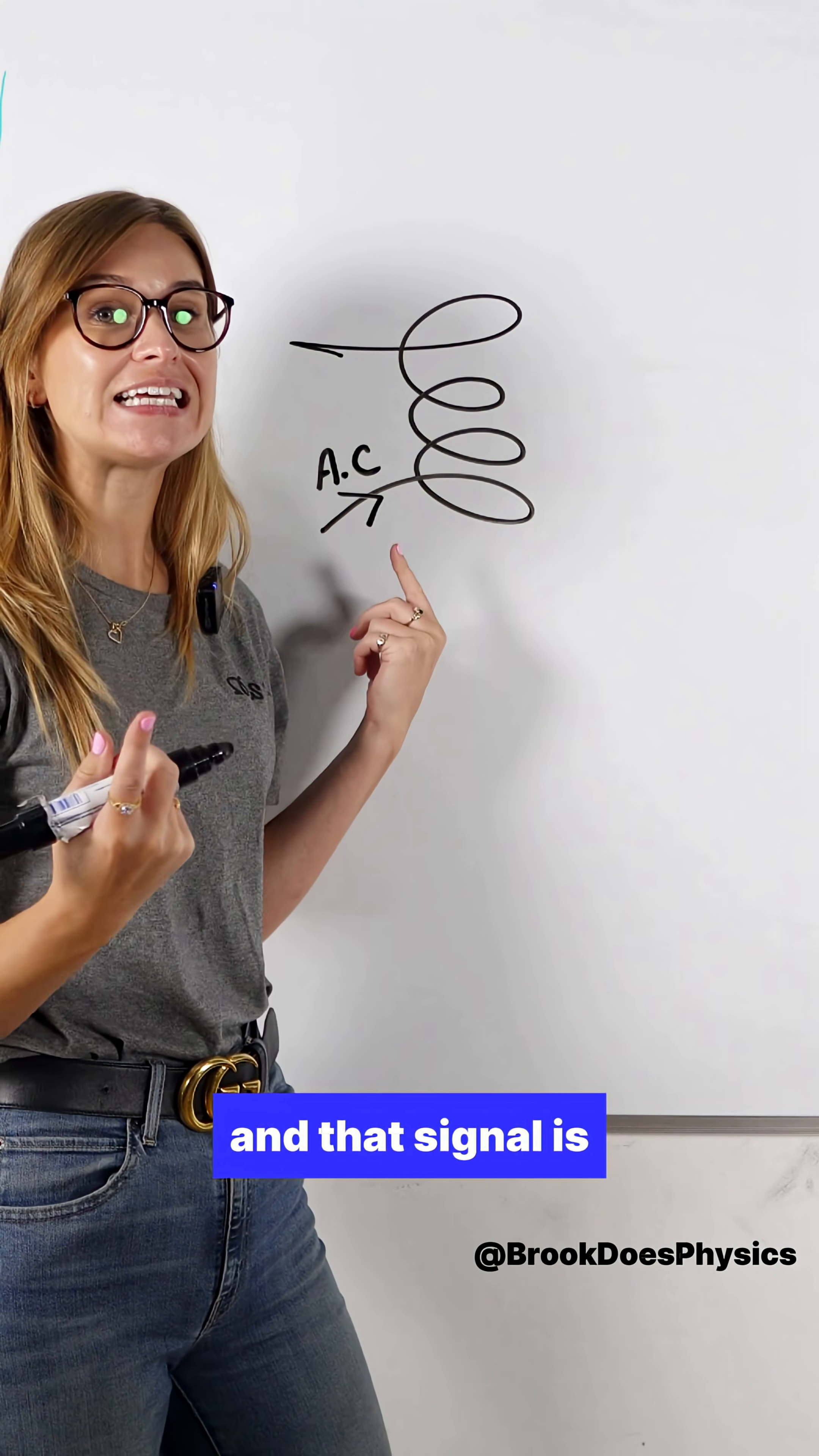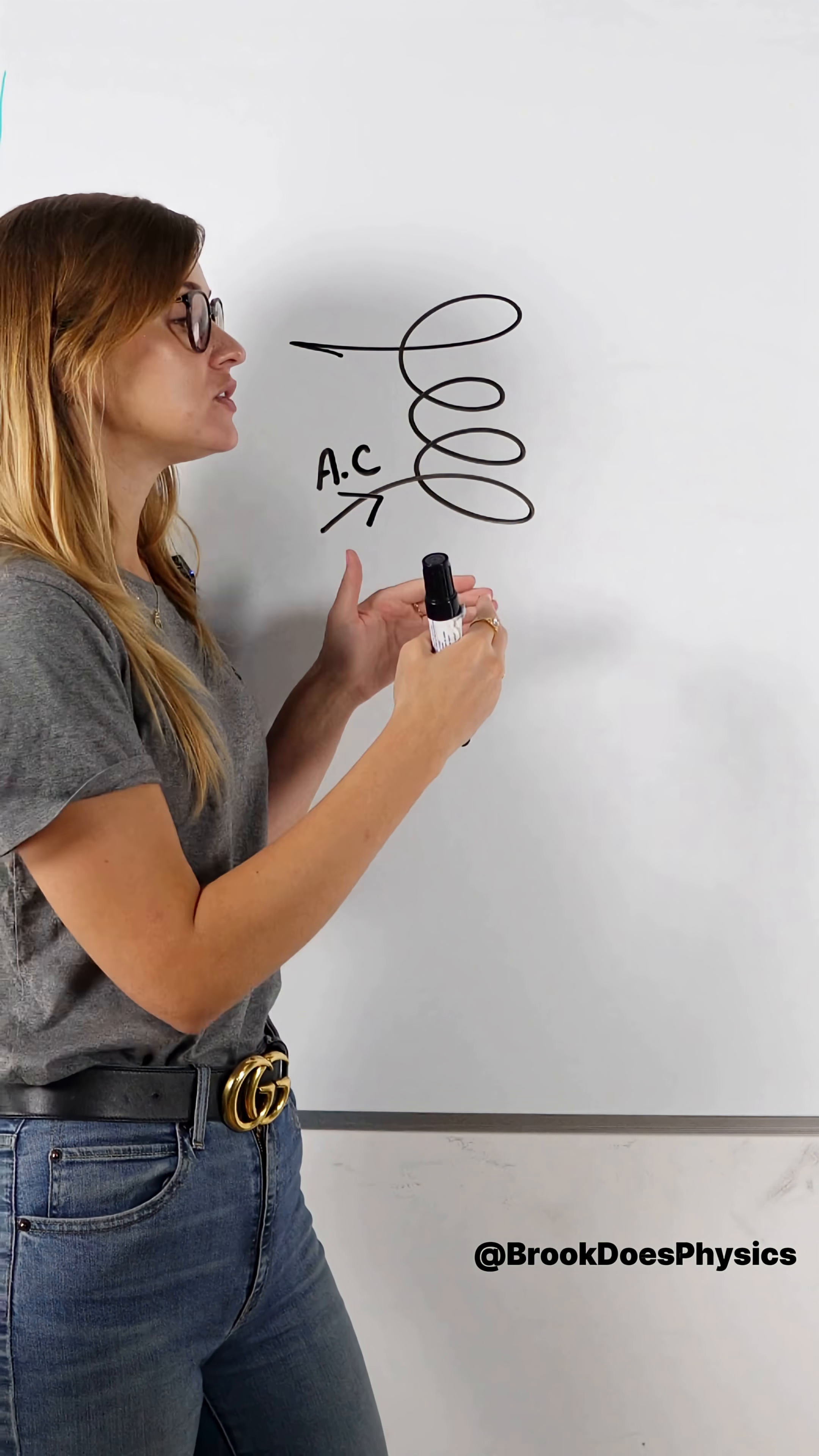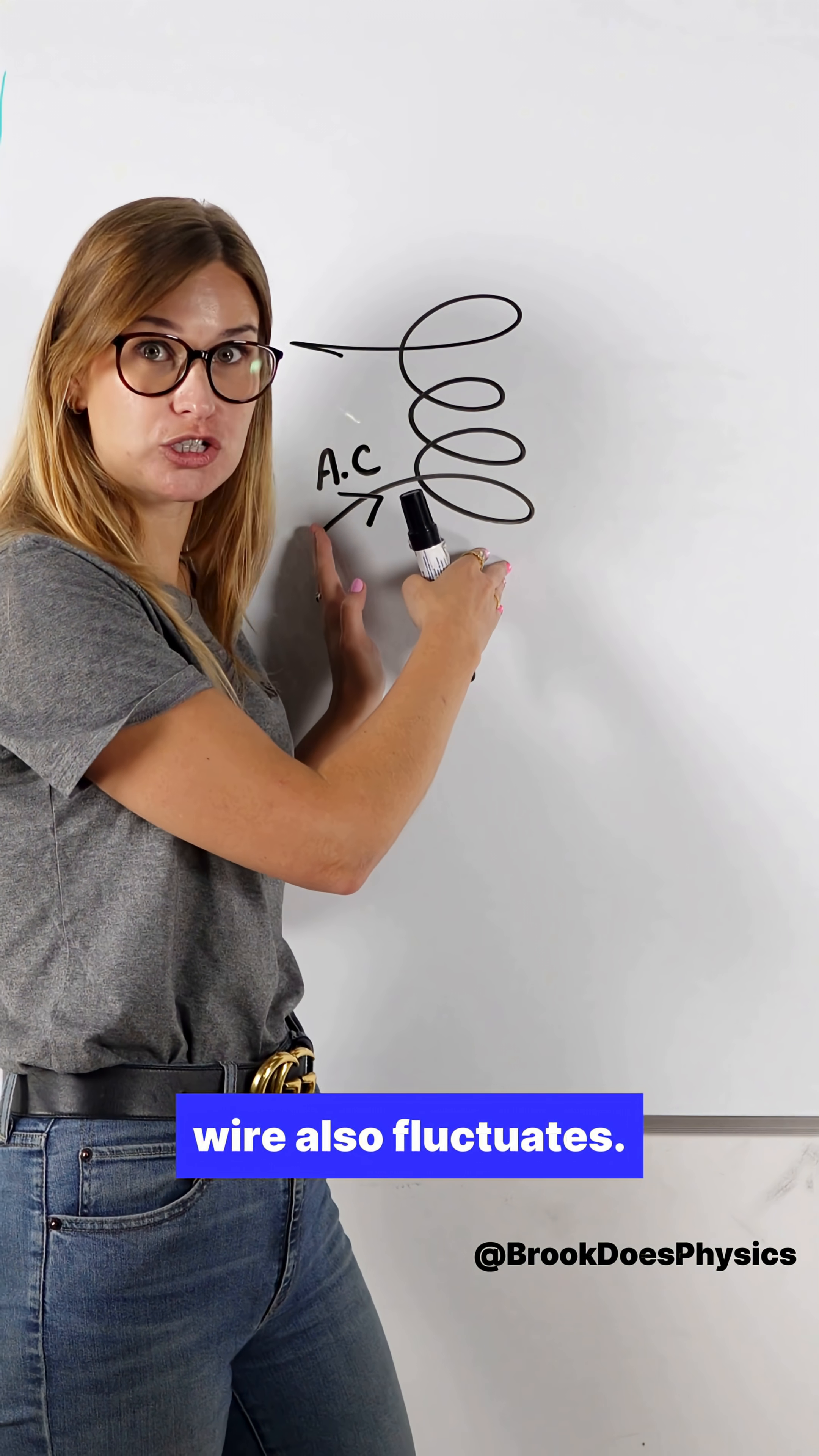And that signal is alternating current that fluctuates going backward and forward. So that means the magnetic field in the coil of wire also fluctuates.